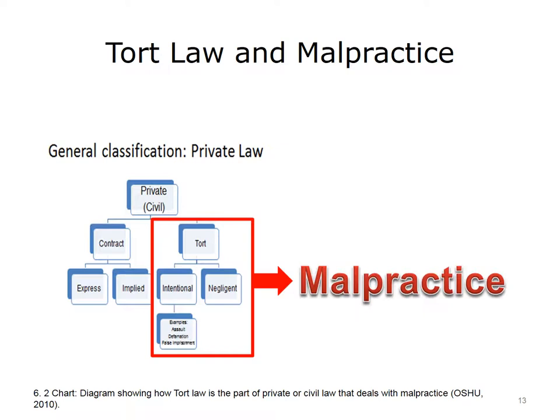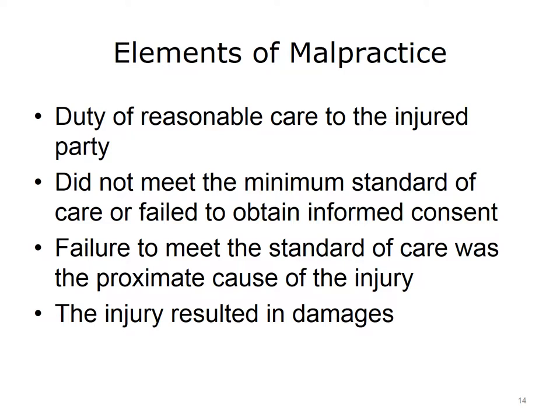A previous lecture in this unit introduced the concept of tort law. This subcategory of civil law deals with something that one person has done to another that has resulted in harm and does not come out of a contractual relationship. The main two types of torts are intentional torts and negligent torts. Most claims of medical malpractice fall under tort law, and the majority are based on a theory of negligence. The first element of any tort claim is to establish that the defendant had a duty to the injured party. In a medical malpractice claim, the defendant is generally the health care professional or organization being accused of negligence.